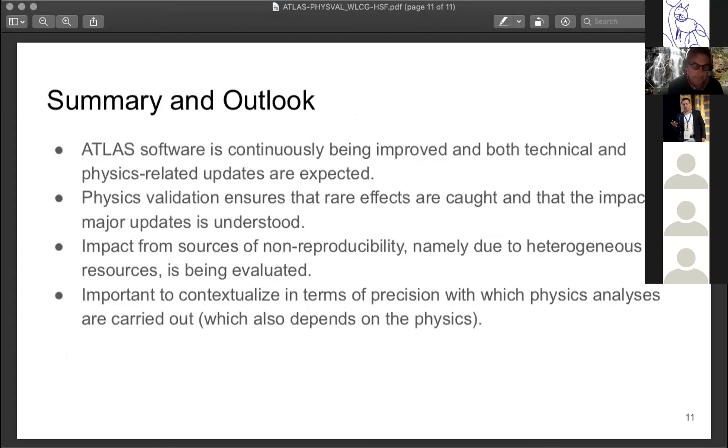For the summary: obviously there's continuous improvements and updates to the ATLAS software that require careful validation. Physics validation has that particular role of ensuring that we catch both rare unwanted effects and also that we understand any major changes in the widest sense, in terms of the objects and the phase space that we're looking at. We're currently working towards quantifying this expected level of variations that we should expect, namely from heterogeneous resources and other technical sources. That's all for me.